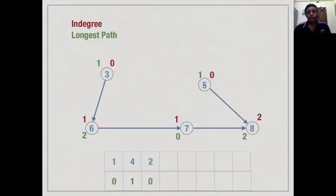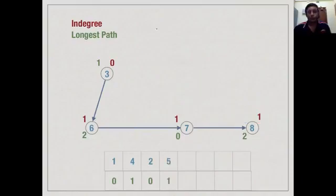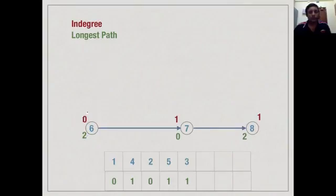When we remove vertex 5, the in-degree of 8 decreases, but since 1 plus 1 is 2 and we already know 8 has a longest path of at least 2, no change is made. When we process vertex 3, it has a longest path of 1, so the longest path to 6 would be at least 2, but we already know it is 2, so again no change. Then something interesting happens: vertex 6 has a longest path of 2, but vertex 7 was believed to have a longest path of 0. Through 6 it has a longer path, so the path to 7 is updated from 0 to 3.